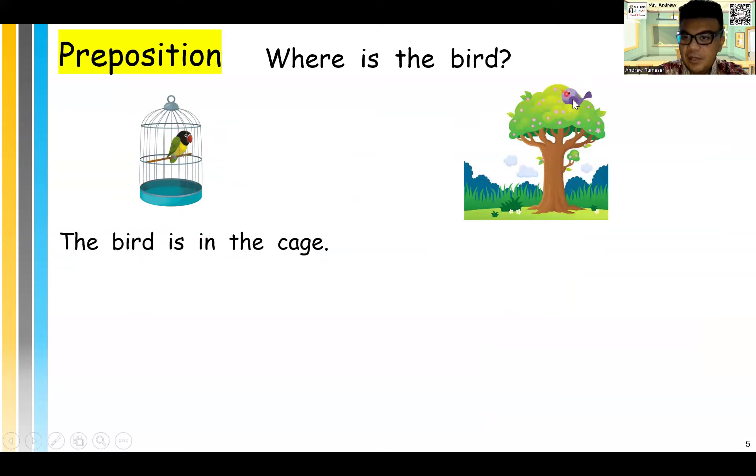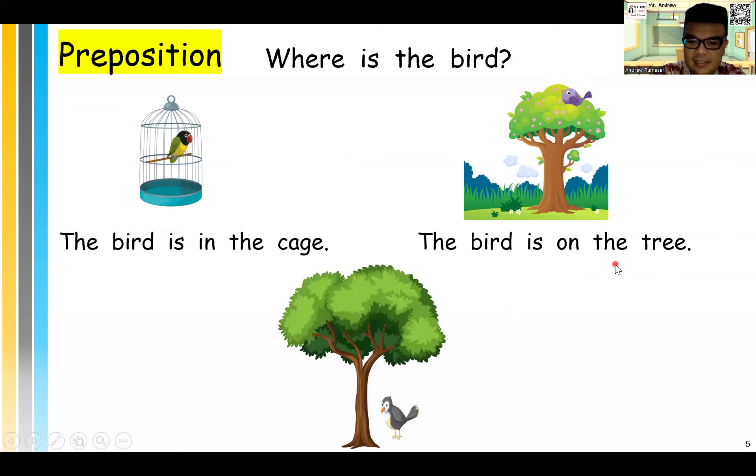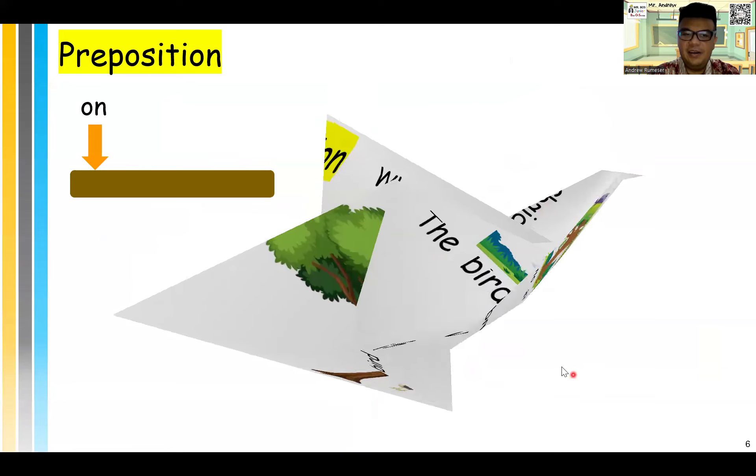Next, where is the bird if the bird is sitting like this? The bird is on. That's right. On the tree, like this. Excellent. What if the bird is here? How do we say where the bird is? Where is the bird? The bird is under, right? This is the tree. Down here is the bird under the tree, all right?